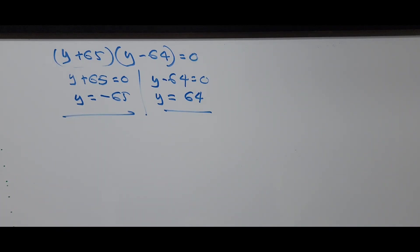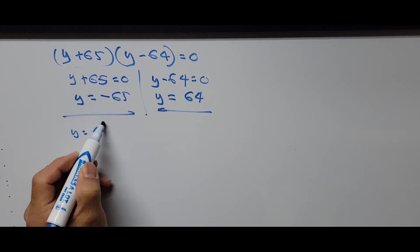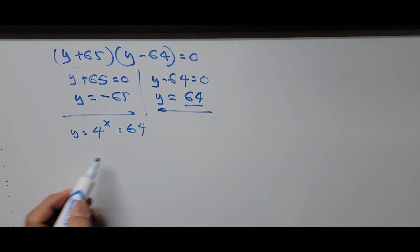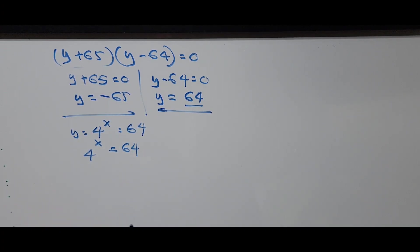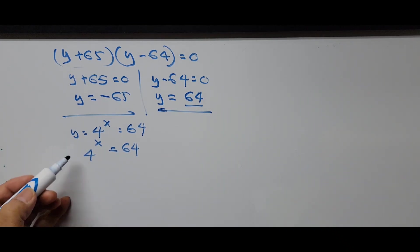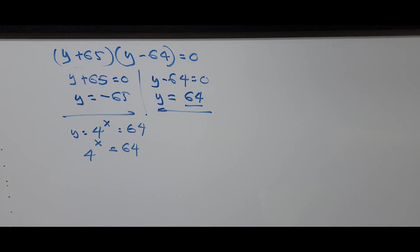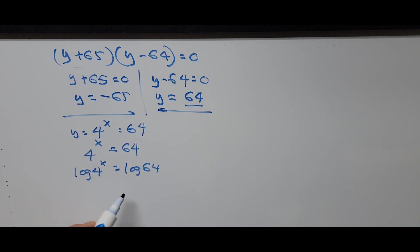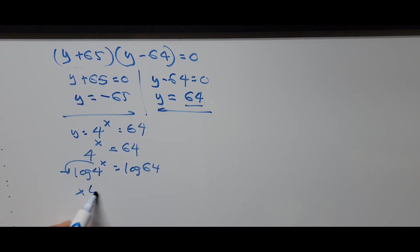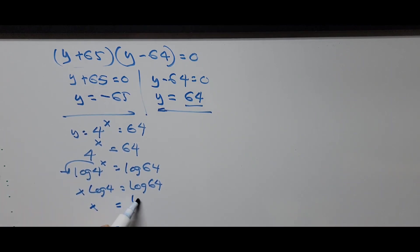Since y is the substituted value for 4 to the power x, using y = 64: 4 to the power x equals 64. To solve for x, we take the common logarithm of both sides, giving log(4^x) = log(64), so x equals log of 64 divided by log of 4.